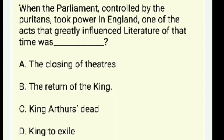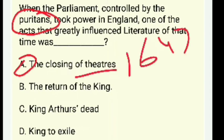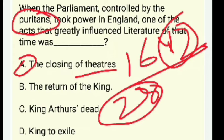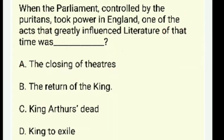When the Parliament controlled by the Puritans took power in England, one of the acts that greatly influenced literature was the closing of theaters. Puritans closed all theaters in 1642 — just 20 to 25 years after Shakespeare's death — and all theaters were closed in England.